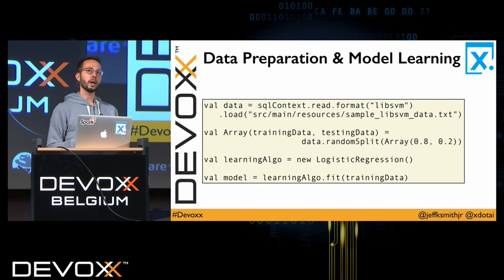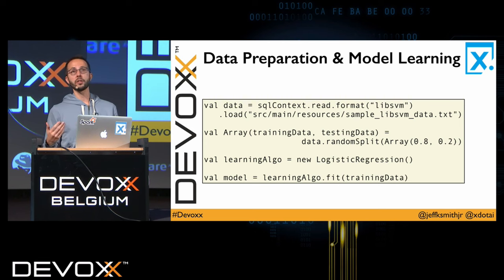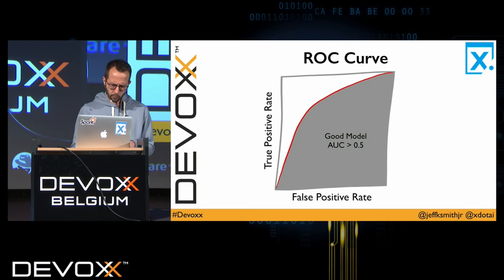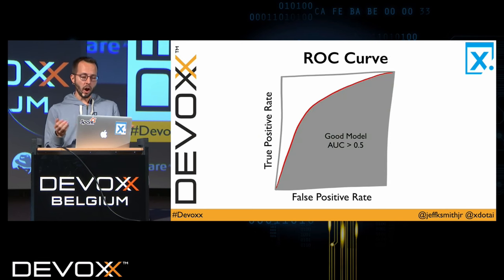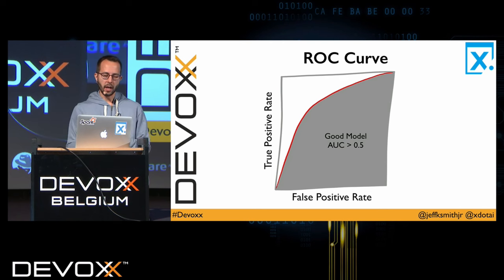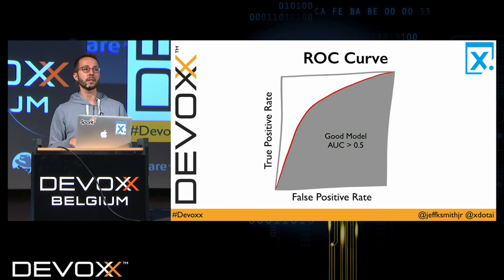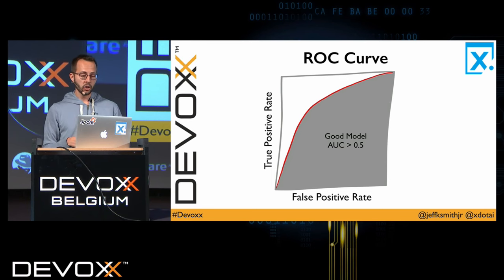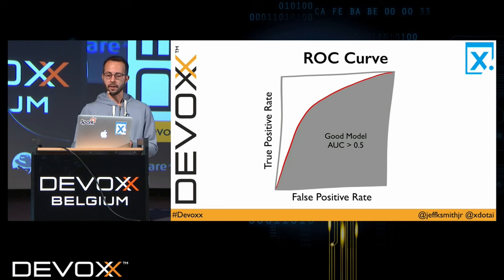Now we want to evaluate this model so we can deploy it in production based on concrete knowledge of its performance characteristics. To do that I need to introduce the concept of an ROC curve. An ROC curve balances true positive rate and false positive rate. A good ROC curve has a shape above the diagonal, so the area under the ROC curve should be greater than 0.5.